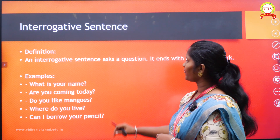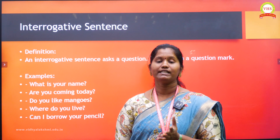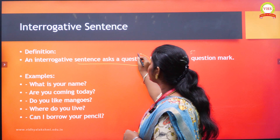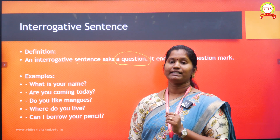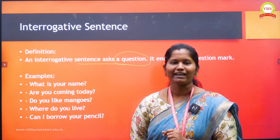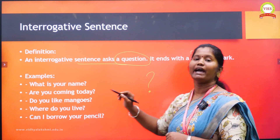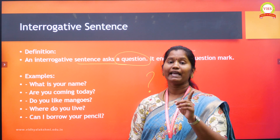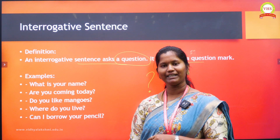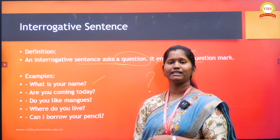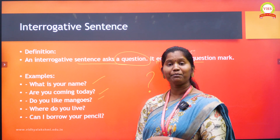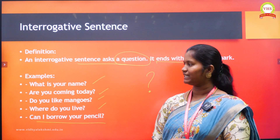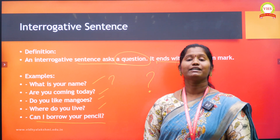Now see the second type: the interrogative sentence. It's a very easy one. We can easily identify an interrogative sentence. An interrogative sentence asks a question and it ends with a question mark. For example: 'What's your name?' — it's a question. 'Are you coming today?' 'Do you like mangoes?' 'Where do you live?' 'Can I borrow your pencil?' So, an interrogative sentence ends with a question mark and it asks a question. Clear?